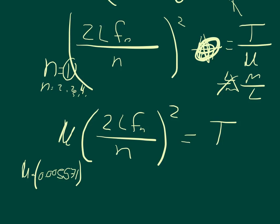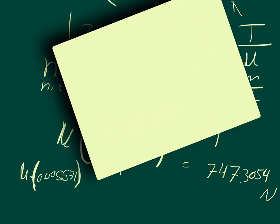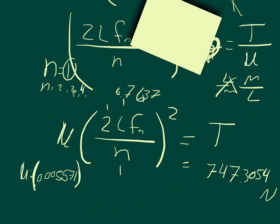So 0.005571 times 2 times the length again, which is 0.7, times the frequency. So we're trying to make it so that the fundamental frequency is 261.6, so this will be 261.6, this will be 0.7, and n will be 1, so we'll square that, we'll multiply it by this, and we'll get that the tension should be 747.3054 newtons, and that's it.